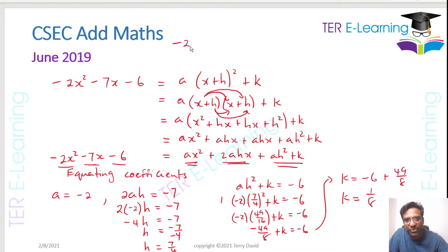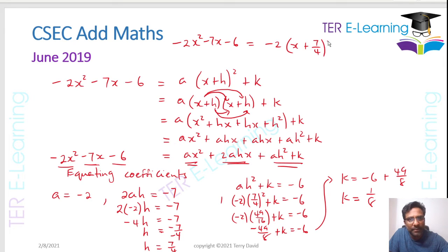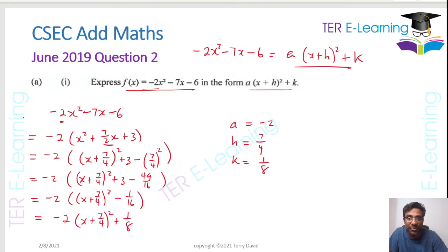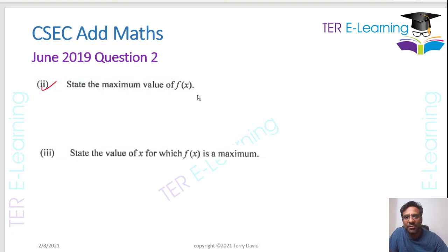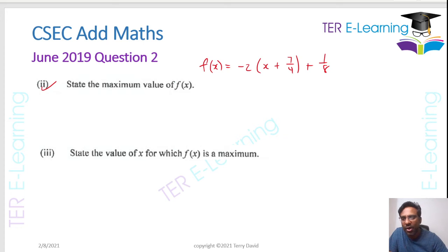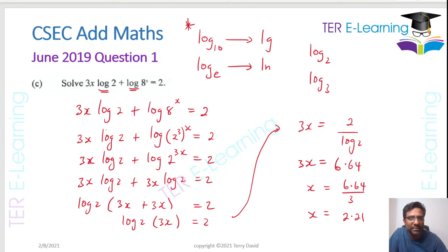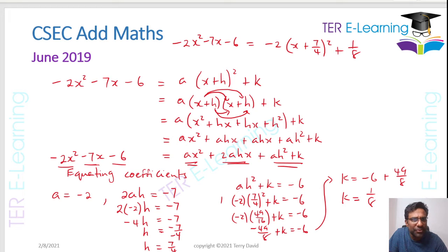We can write minus 2x squared minus 7x minus 6 equals minus 2(x + 7/4) squared plus 1 over 8. We got the same answer in both instances, so you can use either method — it's up to you. Now let's do the next part: state the maximum value of f(x). Now we've written the function f(x) in the form minus 2(x + 7/4) squared plus 1 over 8.